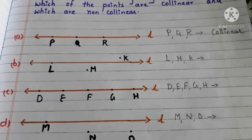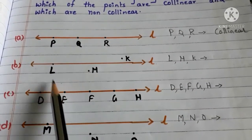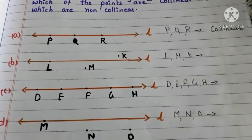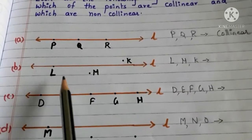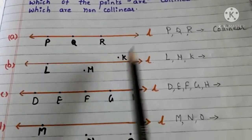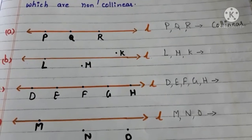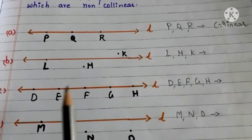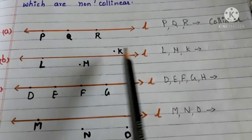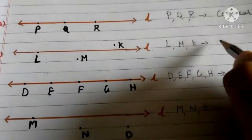Let us go to part B. Here we have the line L and the points L, M and K. L, M and K are not on the same line. So, the points L, M and K are non-collinear points.